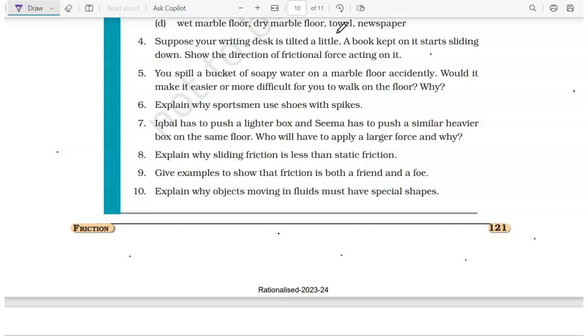Suppose your writing desk is tilted a little. A book kept on it starts sliding down. Show the direction of frictional force acting on it. So just draw a sliding table, draw a book kept on it - obviously it's going to slide down like this under the effect of gravity. So what did I tell you? Friction force always acts opposite to the motion of the object. So motion is towards the left-hand side, so friction force will act towards the right-hand side.